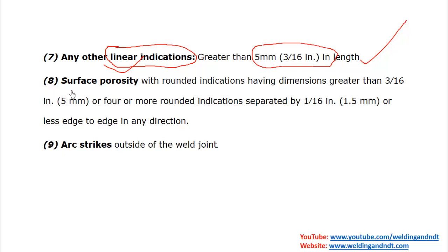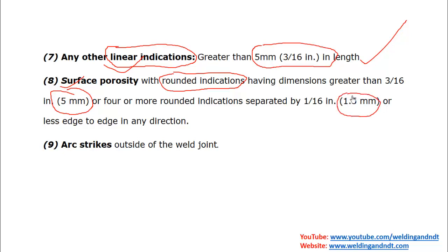Surface porosity is a rounded indication. It is not allowed if greater than 5 mm, or if there are 4 or more rounded indications separated by 1.5 mm or less — that cluster shall also be rejected. Arc strikes, which occur when an electrode holder or electrode accidentally touches the parent metal, are not allowed at all.